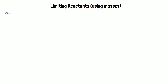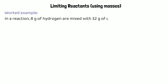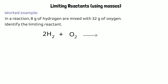When working out limiting reactants, they usually won't give you the number of moles — they'll give you the masses. For example: eight grams of hydrogen are mixed with 32 grams of oxygen; identify the limiting reactant. It's the same symbol equation and the same two-to-one mole ratio, but we need to convert grams to moles using moles = mass ÷ Mr.